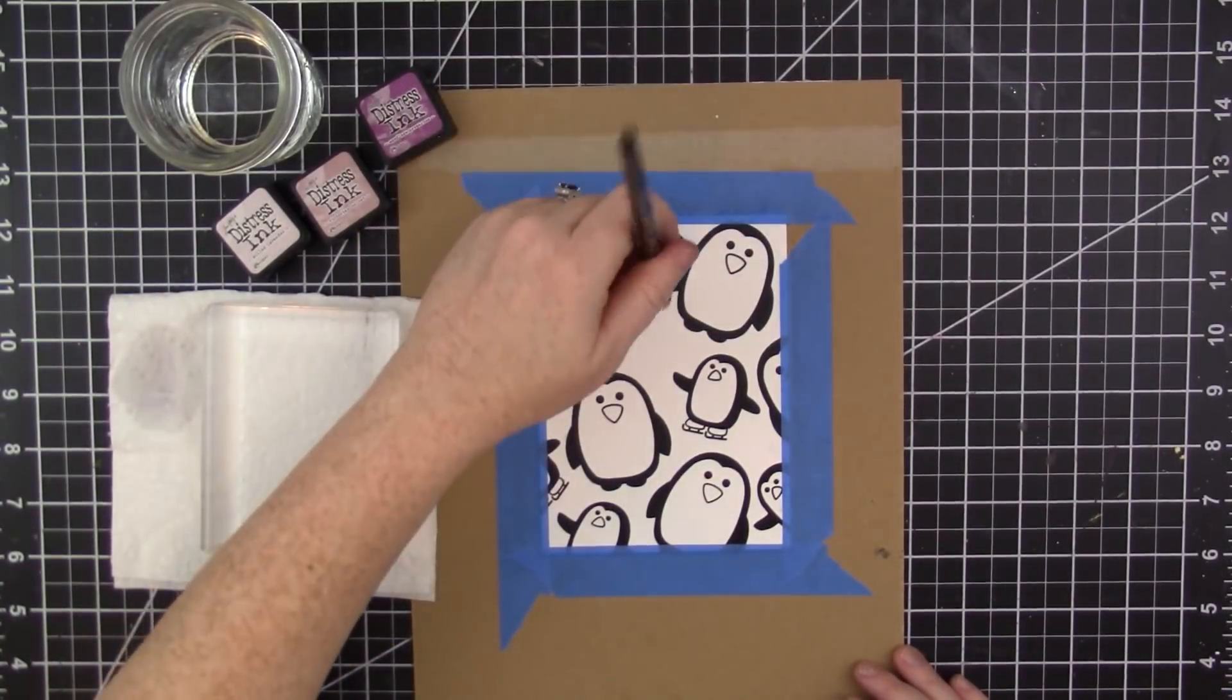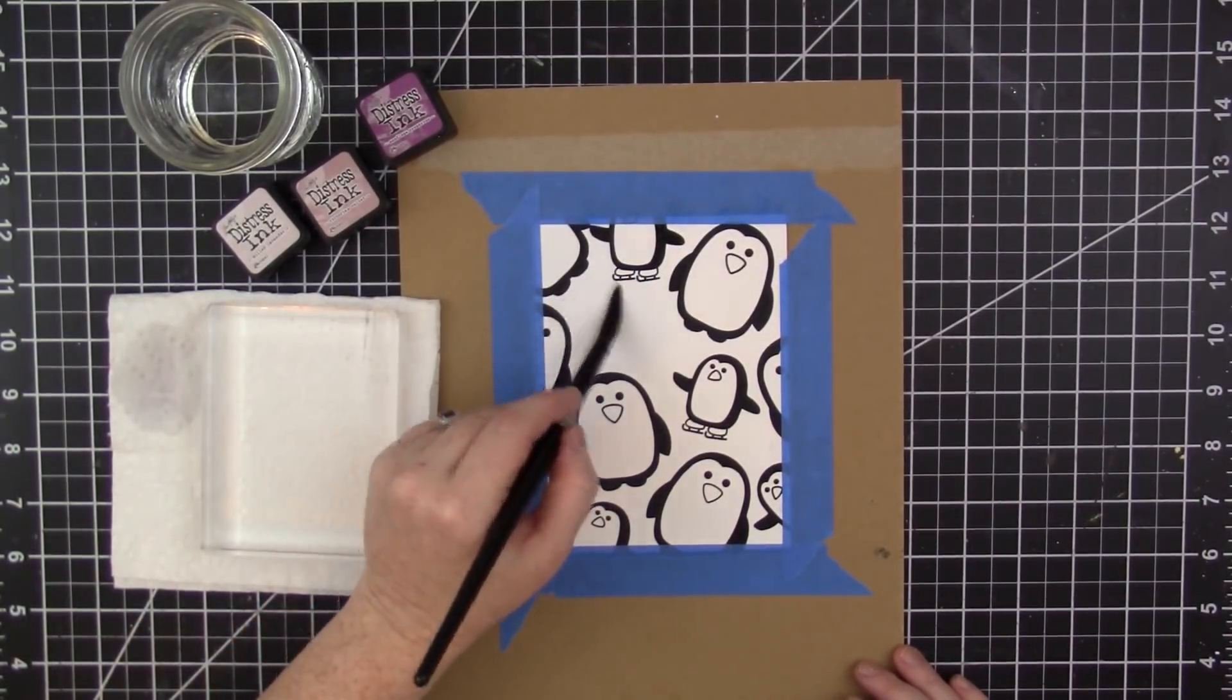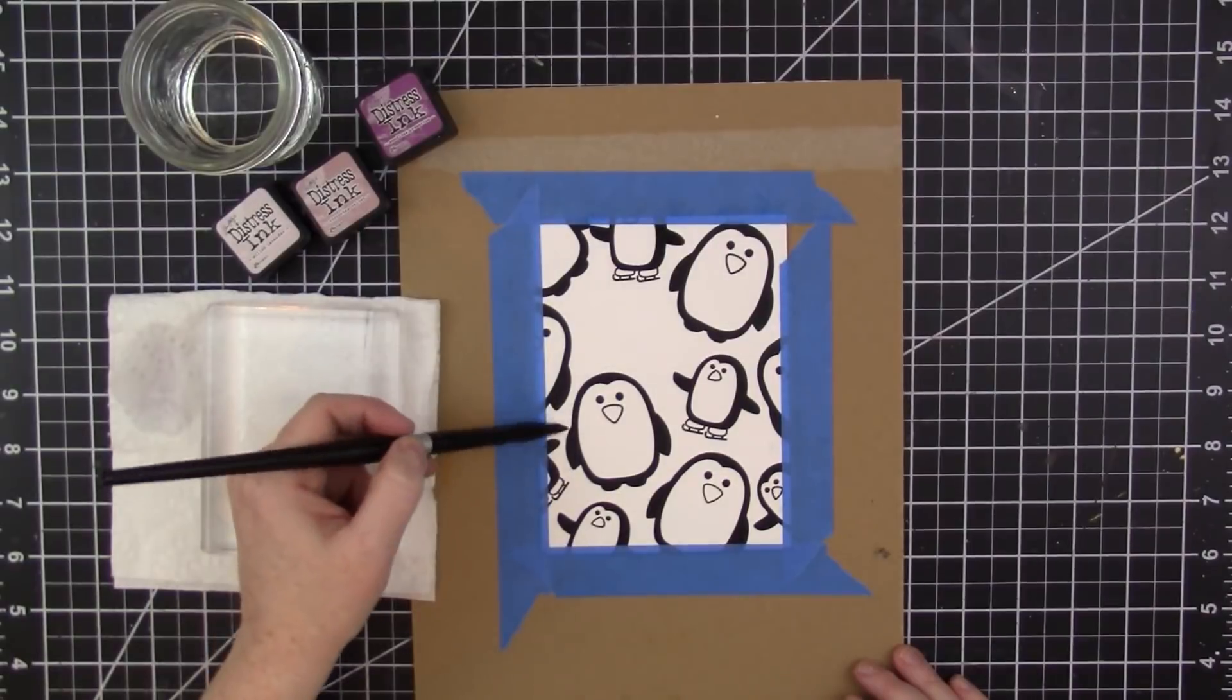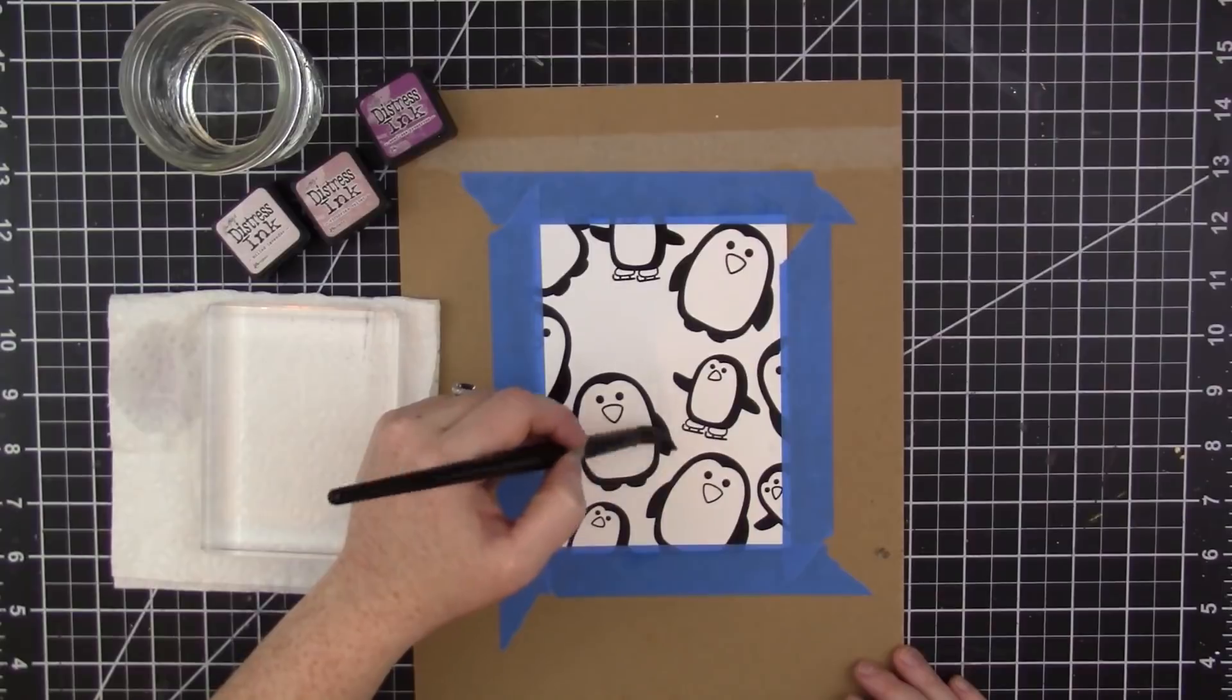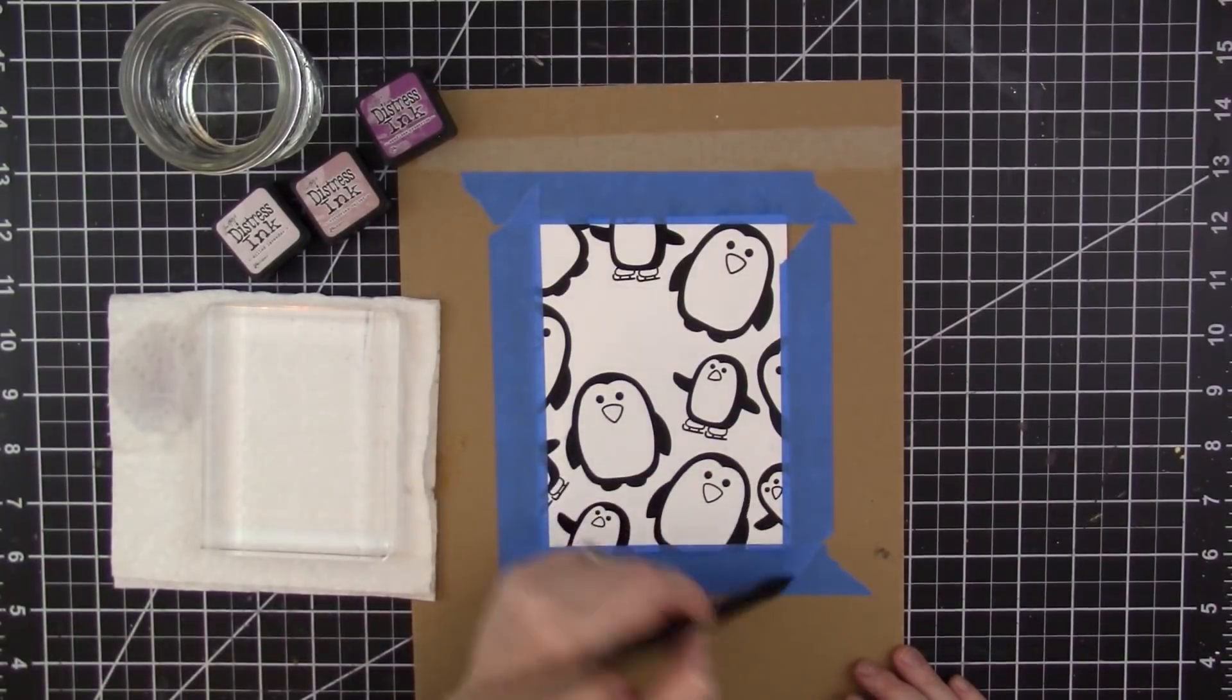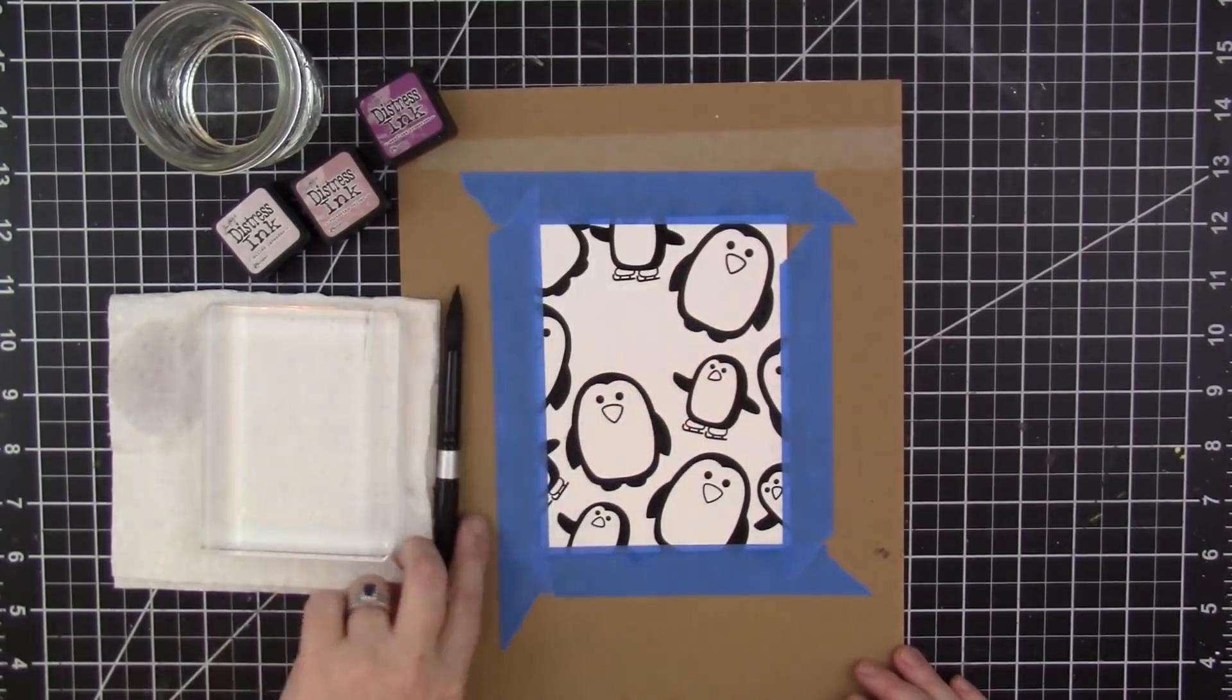But you could also use like a piece of plastic. I'm using a number 12 round brush by the Silver Brush Company. I just dip my brush first in some clean clear water and then apply that water to the spaces between the penguins, and then I'll go in with my color.